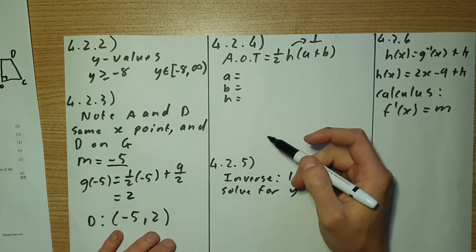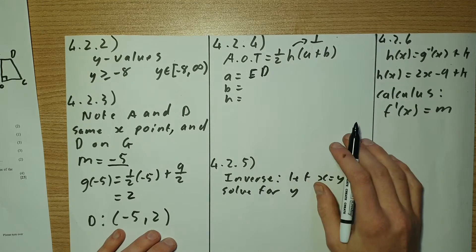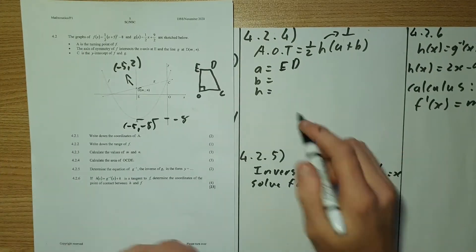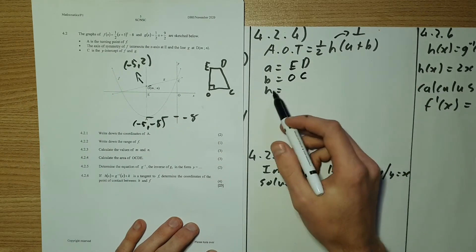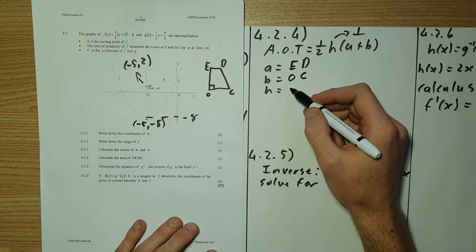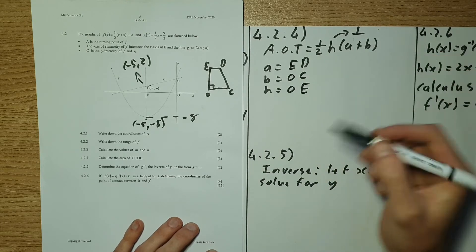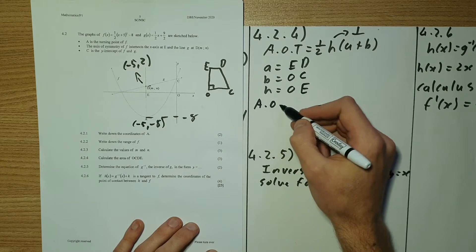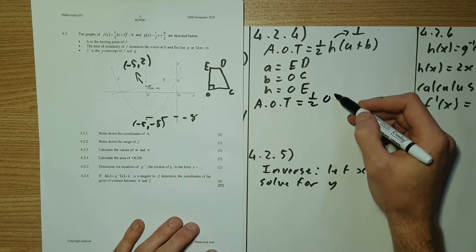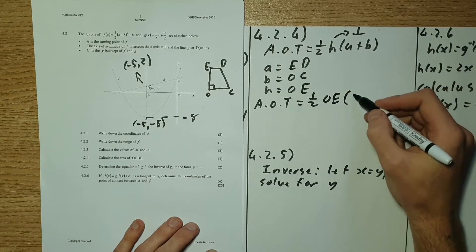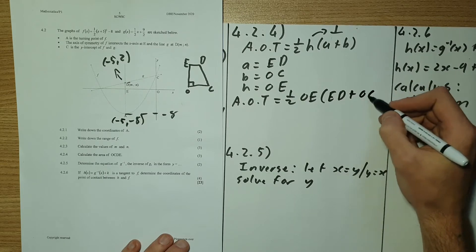So in this case, A is going to equal to ED. B is then going to equal to OC. And my perpendicular height is going to equal to OE. So now I can substitute this into the formula, which will then be area of trapezium equals to a half my height. So that's OE times A is ED plus B, which is OC.